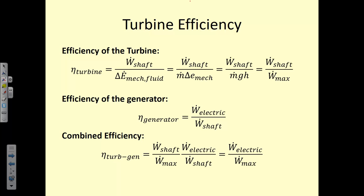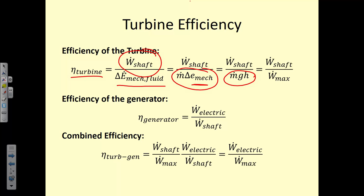As with any device that converts energy from one form to another, we have to talk about efficiencies. For a turbine, efficiency equals the desired output — some shaft power or rotational energy — divided by the mechanical energy available from the fluid. We can look at this as the mass flow rate times the change in mechanical energy, or as mass flow rate times just the change in potential energy, representing the maximum energy available from the fluid as it goes from some height to zero potential.